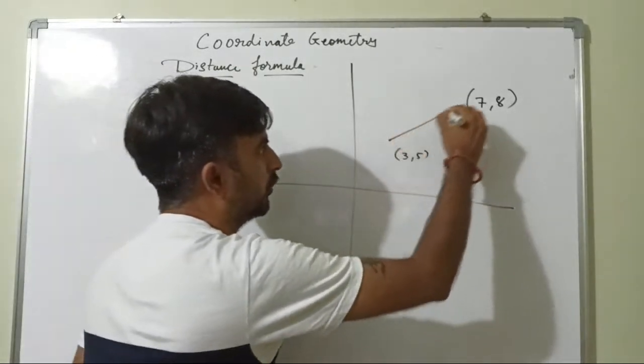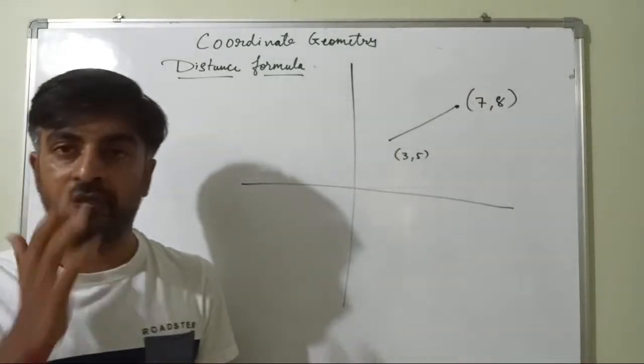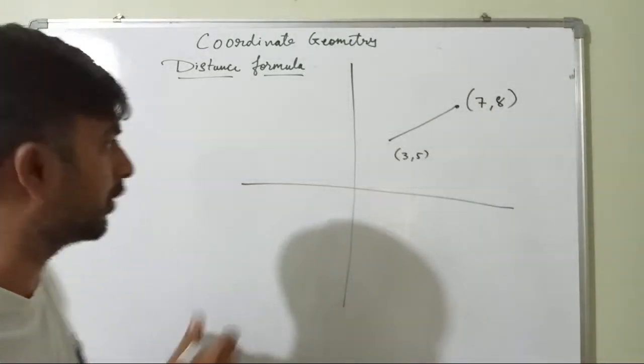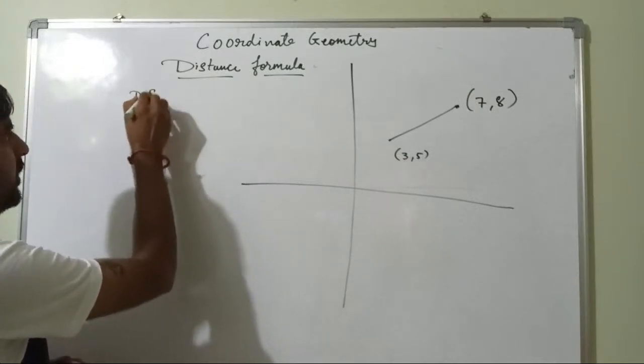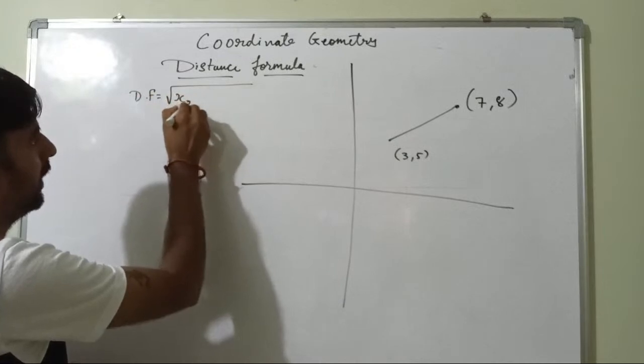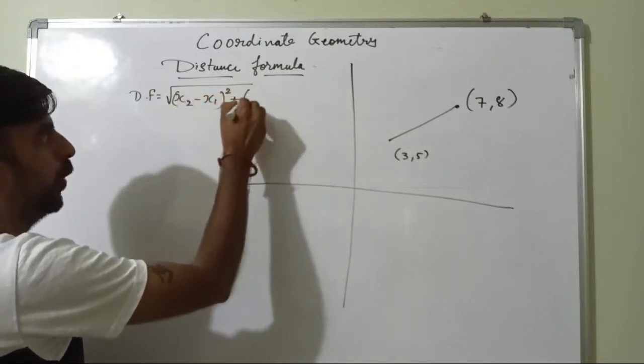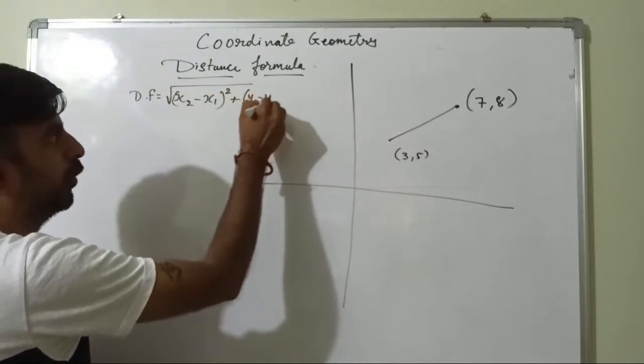So here we need to find out the distance between these two. For that, one formula is called the distance formula. And this is the distance formula: distance equals to x2 minus x1 whole square plus y2 minus y1 whole square.